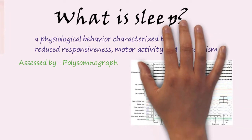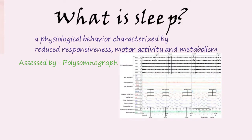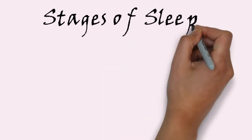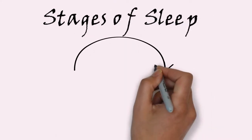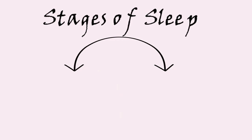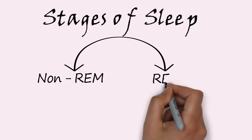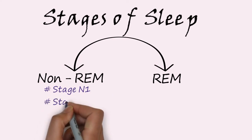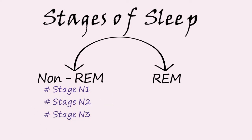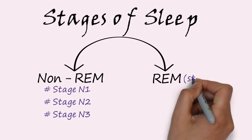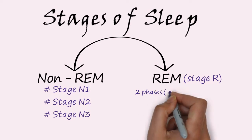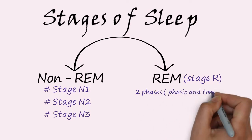Sleep is basically divided into two stages: non-rapid eye movement (non-REM) and rapid eye movement (REM). Non-REM is further divided into stages N1, N2, and N3. REM sleep, also known as stage R, is further divided into phasic REM and tonic REM.